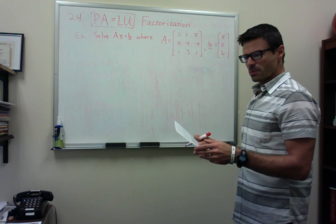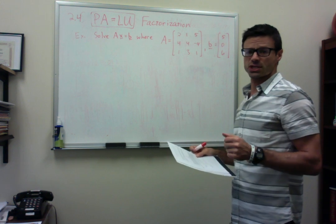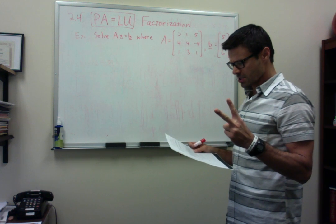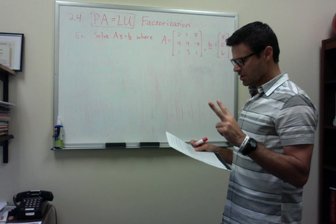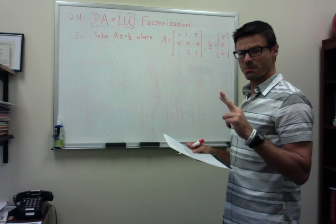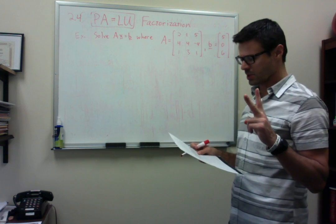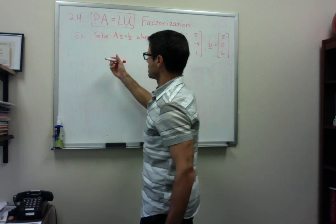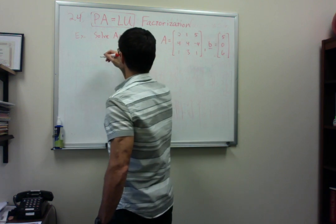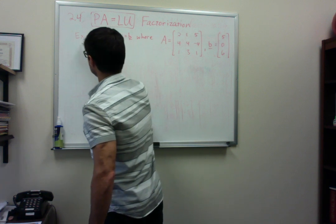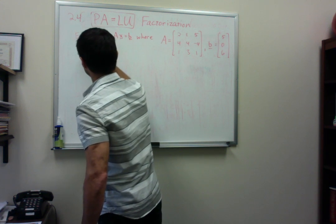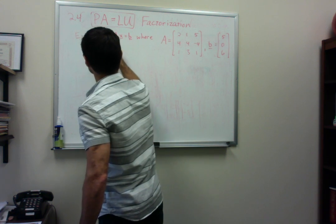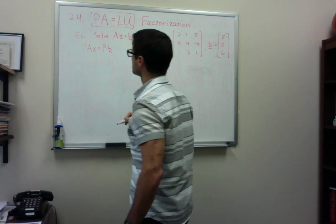Remember in just using the LU factorization, there's a two-step process. Except here now the first step is modified slightly. If we start with AX equals B, we multiply both sides of that equation by P, so we get PAX equals P times B.